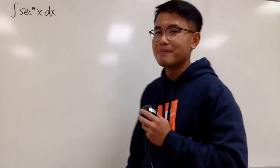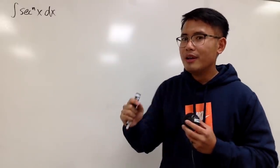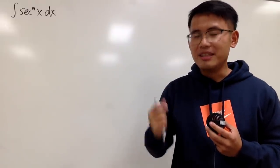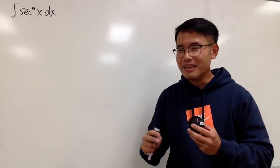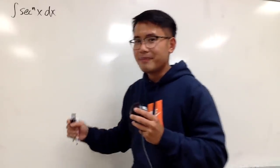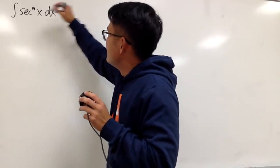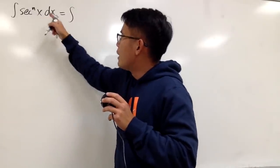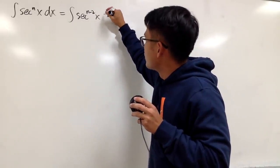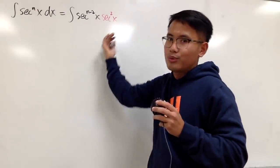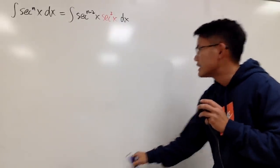Here we have the integral of secant to the nth power of x. The easiest power to integrate is 2, because the integral of secant squared is just tangent. So I'm going to break this apart: this is the same as integrating secant to the n minus 2 power of x times secant squared x dx. When you add the powers, you get back to the original. That's the prep work.